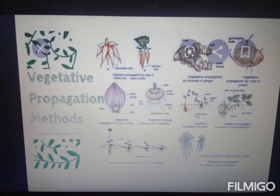Zoospores are flagellated, motile, asexual unicellular spores produced by the majority of algae and certain fungi. Examples include Chlamydomonas and Phytophthora.